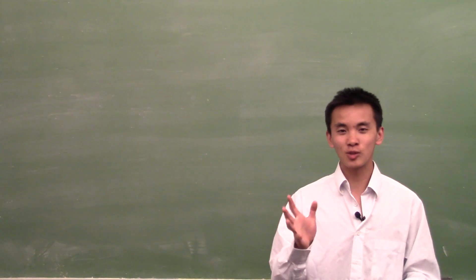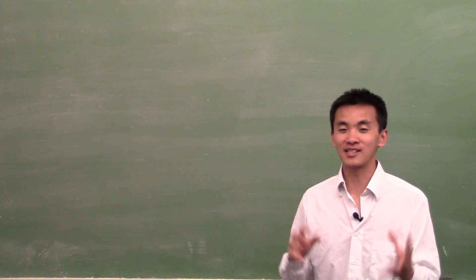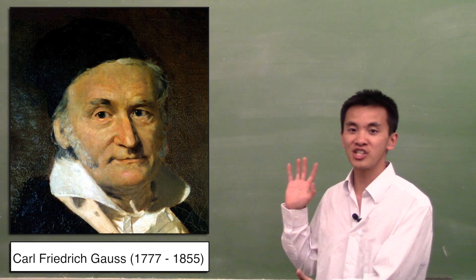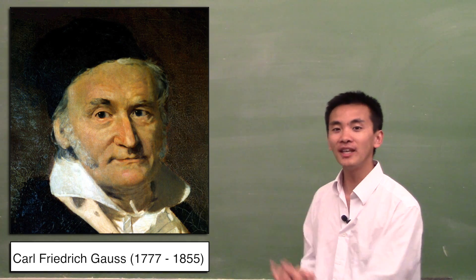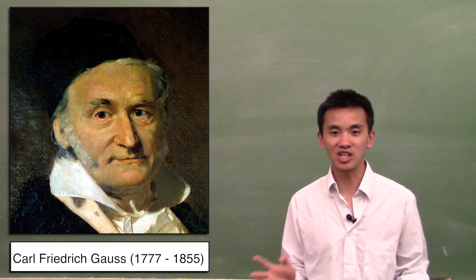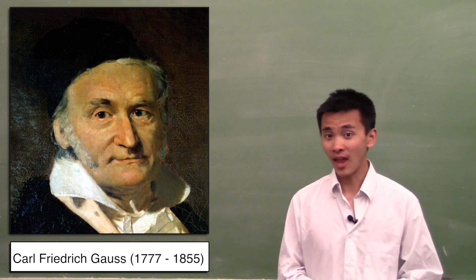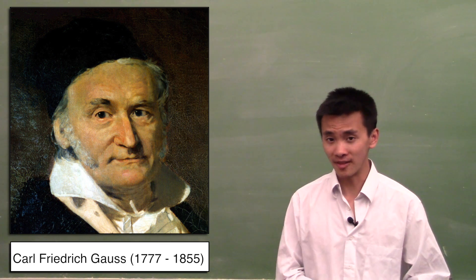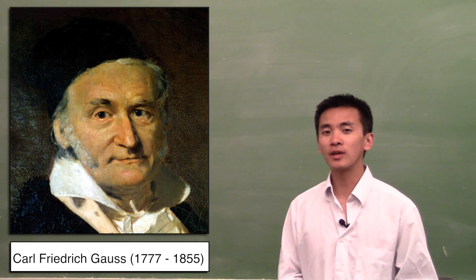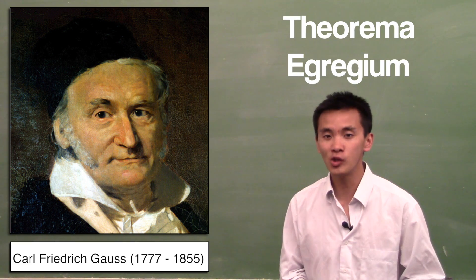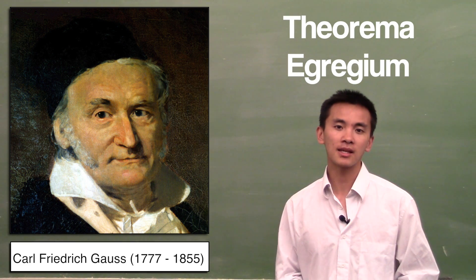Well, the answer to this question leads us to talk about the prince of mathematics, the great Karl Friedrich Gauss, regarded by many as the greatest mathematician of all time, and the theorem that he proved in this case is called Theorema Egregium, which in Latin means remarkable theorem.